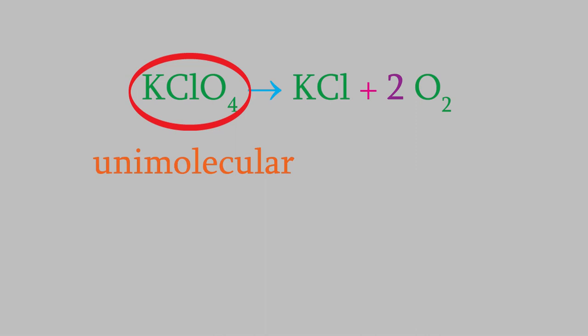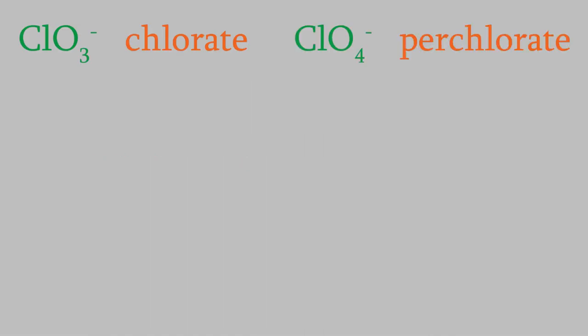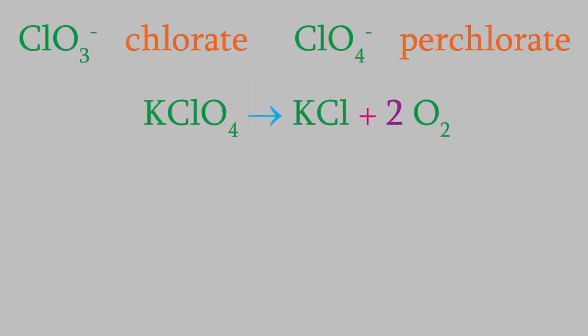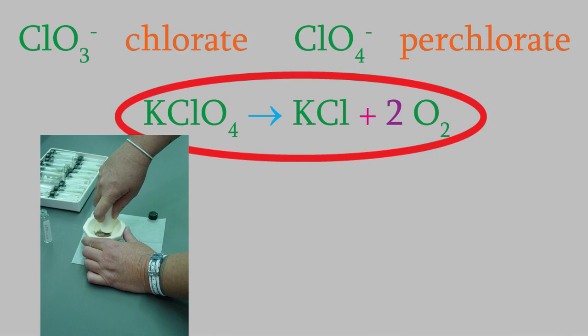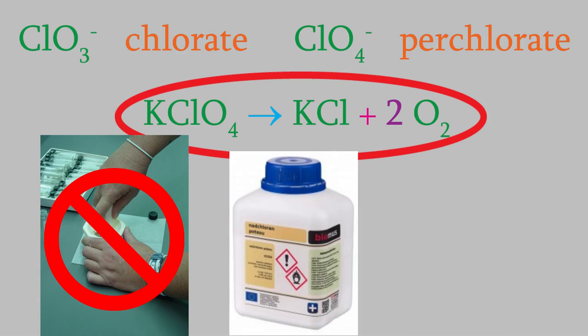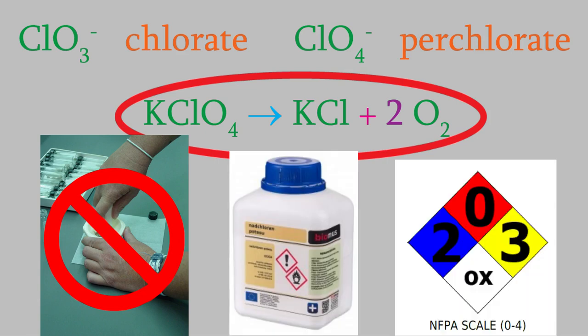By the way, this is a good time for me to give you an important safety tip. Compounds like chlorates and perchlorates, including this potassium perchlorate, are strong oxidizers. They undergo decomposition reactions like this one very easily, and those reactions are very exothermic, sometimes even explosive. For that reason, you should never use a mortar and pestle to grind up a chlorate or perchlorate without thoroughly reading the warning labels first. If the label warns you that the compound is a strong oxidizer, do not grind up the solid, because the friction generated by grinding could be enough to set off the reaction.